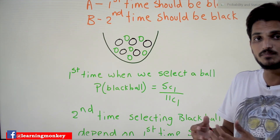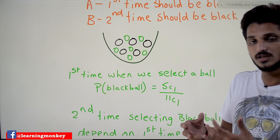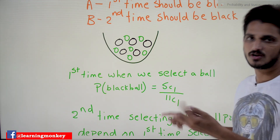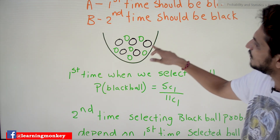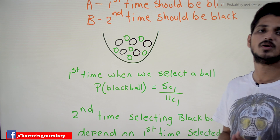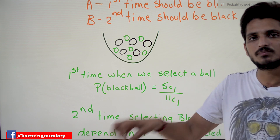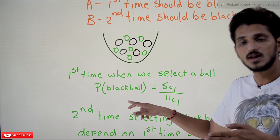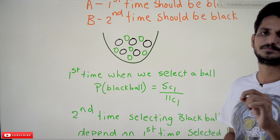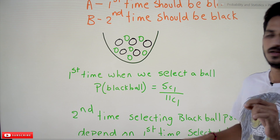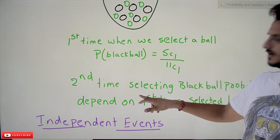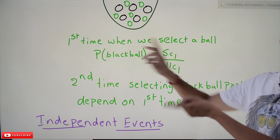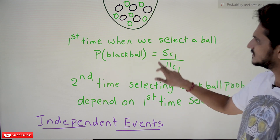We can pick a ball with 11C1 possibilities — our sample space. Out of that, how many black balls are there? 5 black balls. So 5C1 divided by 11C1 is our probability of picking a black ball the first time. But the probability of selecting a black ball the second time depends on what happened in the first selection.